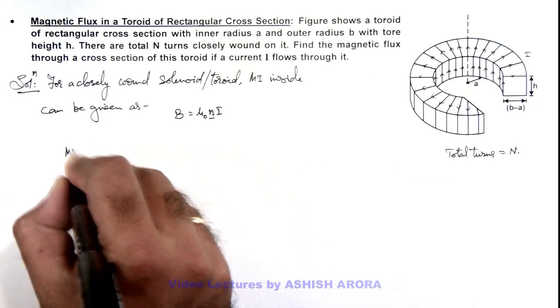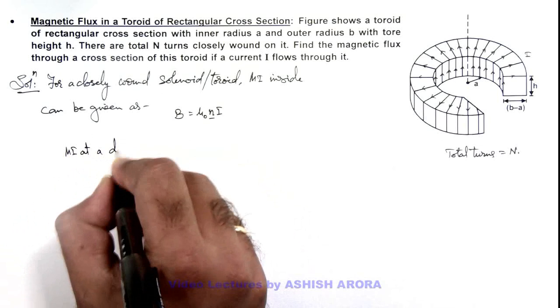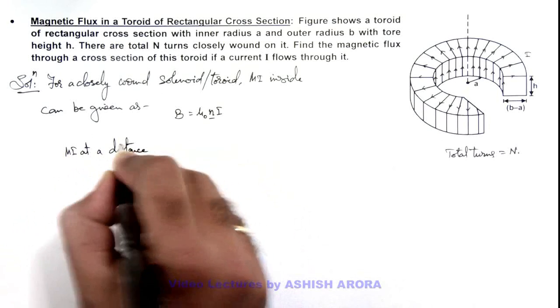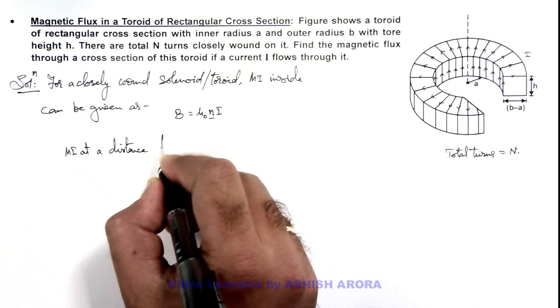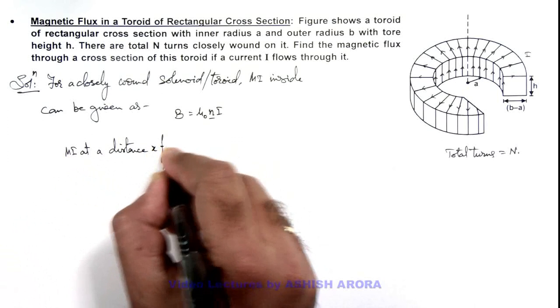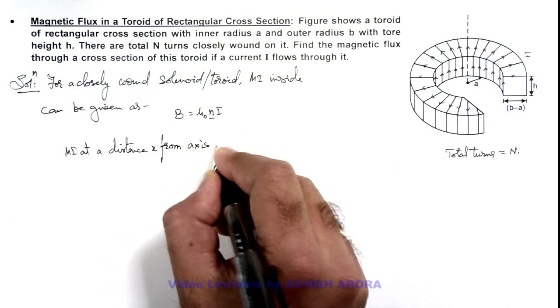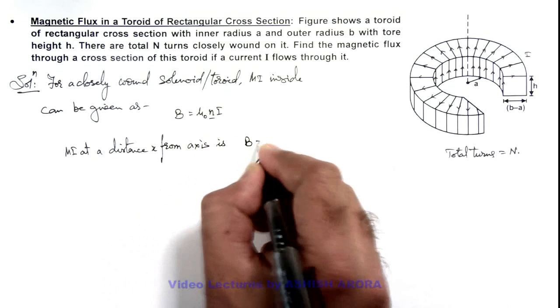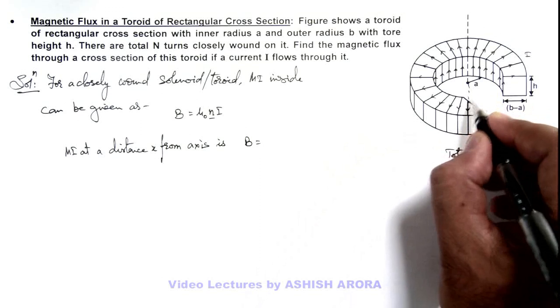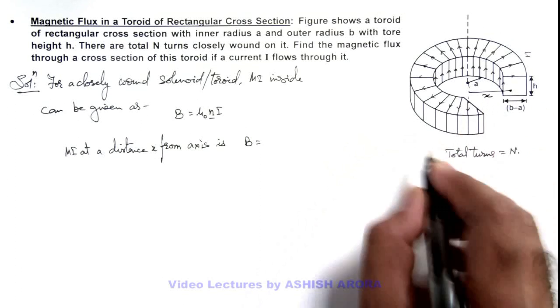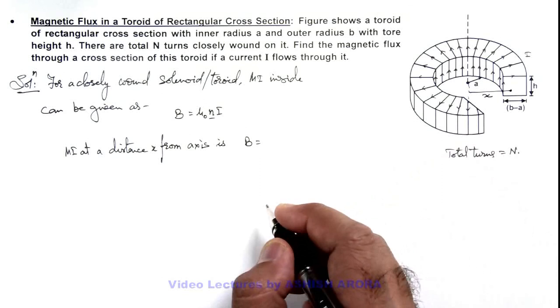So in this situation we can calculate the magnetic induction at a distance x from the axis. This B we can write if from this axis at a distance x we consider a point inside the toroid cross section.